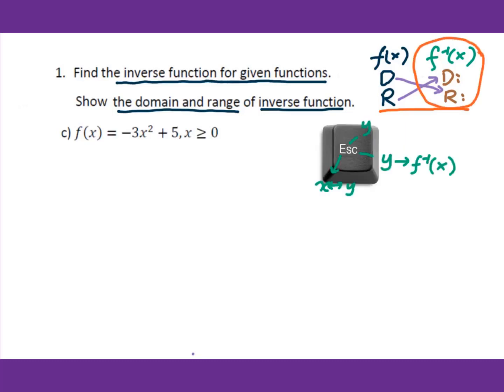Using the ESC steps, the first step is to exchange x and y. Since f(x) means y, we get x equals negative 3y squared plus 5.